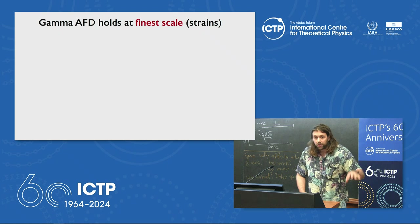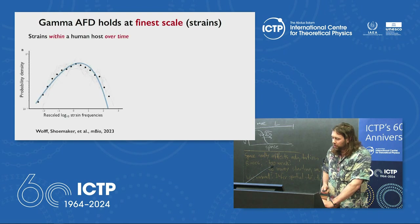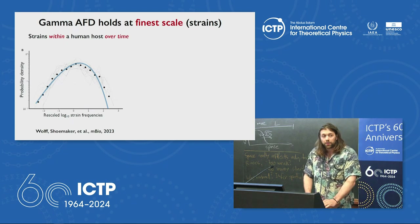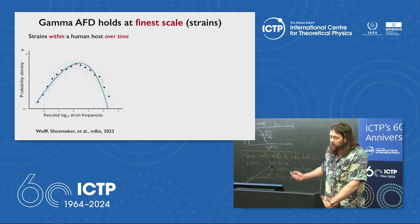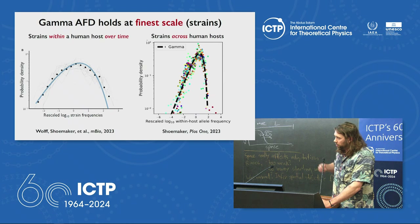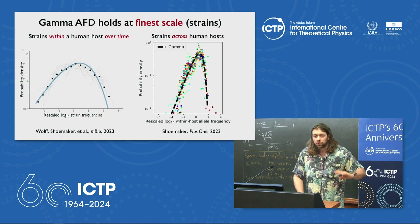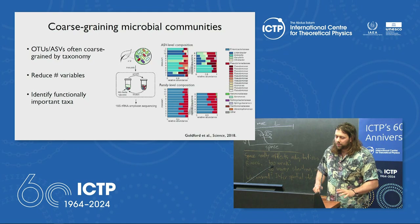Going lower than the 16S ASV/OTU scale, the finest scale is sub-16S strain structure. In a collaboration at UCLA we looked at strain dynamics within a single human host over time — plotting distributions across strains and hosts, everything collapses and can be described by a gamma distribution. Similarly, looking at single-species single-strain allele frequencies across hosts, you can get back the same shape. Within a host and across hosts at the strain level, you observe the same thing as at the species level.